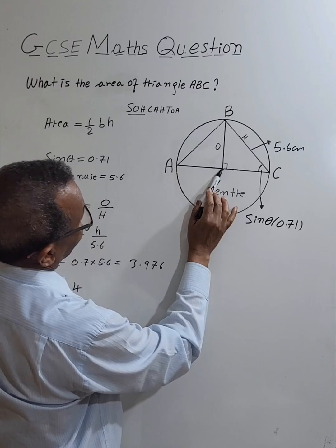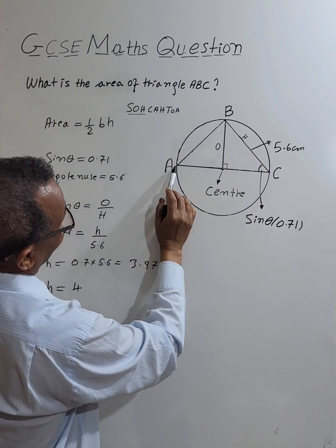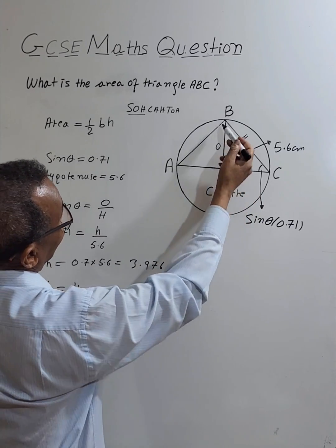Since this is the center, the height is the radius, and the base of the triangle is the diameter of the circle, which is 2 times the height. So the base equals 2 times 4 is 8.